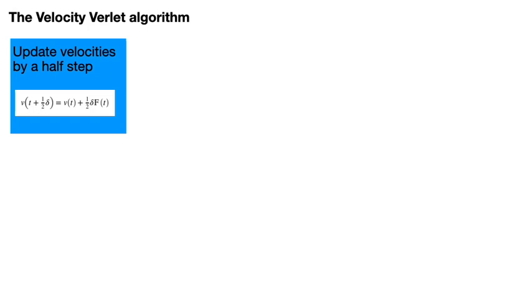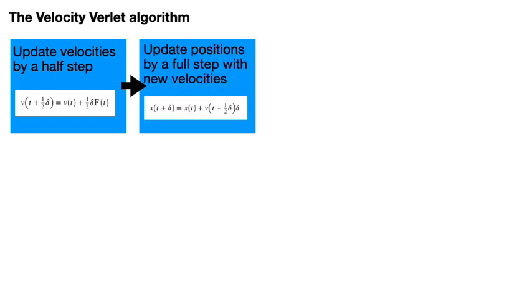Once we have the velocity at the half time step we then update the positions using that velocity and the equation shown on this slide. The equation here simply uses the fact that the distance travelled is approximately the velocity at the half time step multiplied by the length of the step, delta.